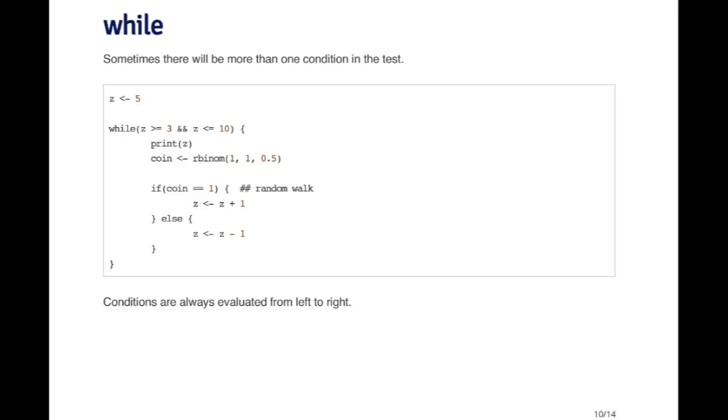If the coin is a 1, I'm going to add one to my value. And then if the coin is equal to 0, or any other value for that matter, I'm going to subtract one from z. So I'm sharing a little random walk here. The value of z is going to go up or down depending on my little coin flip here.